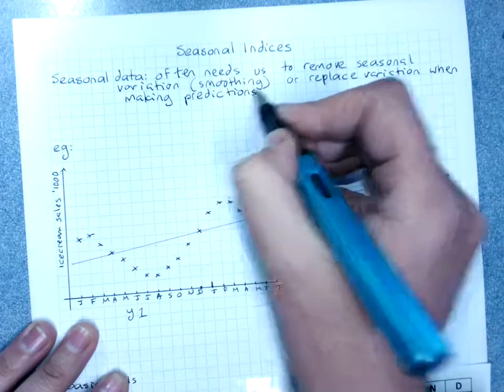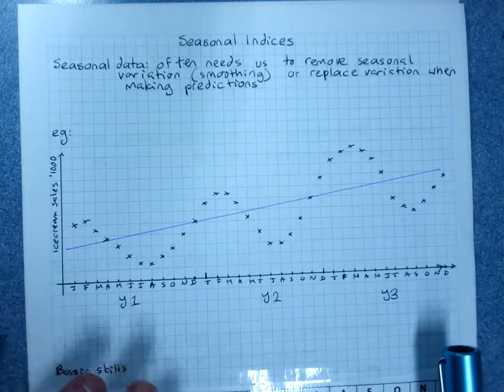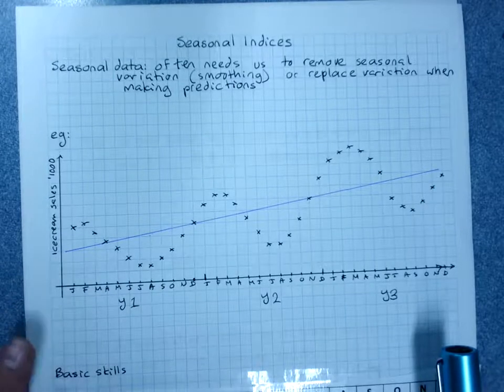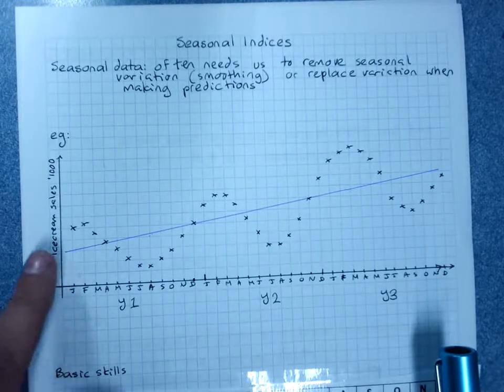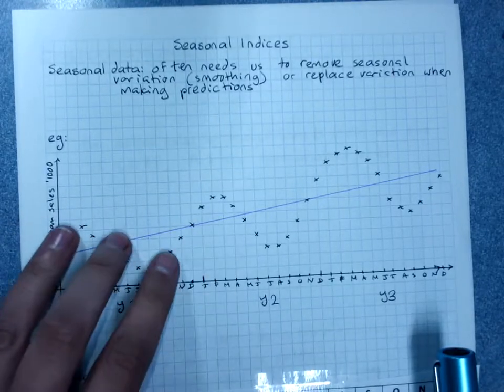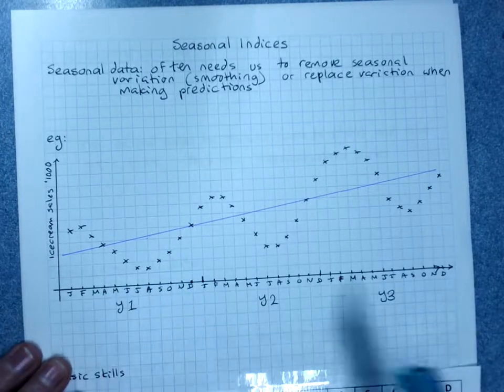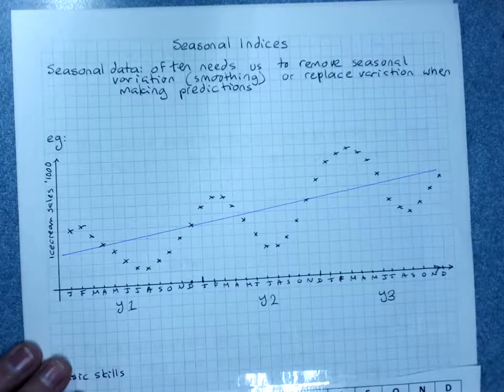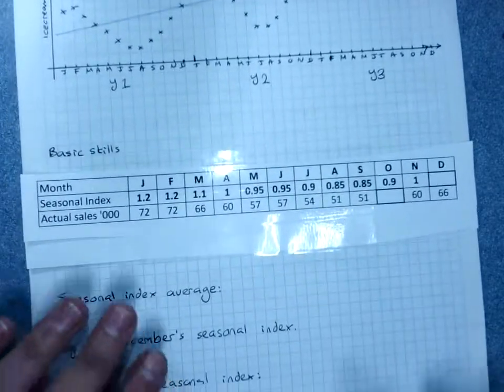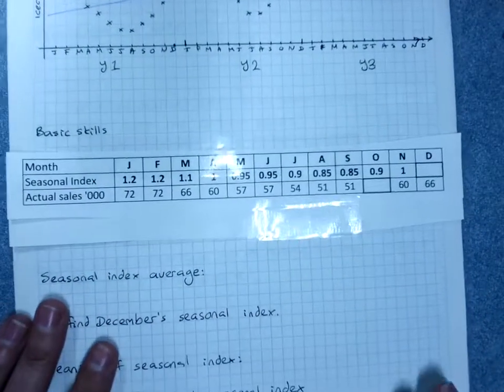Seasonal indices let us do that. This lesson we will just check: can we understand the concept of a seasonal index? Can we use a seasonal index to de-seasonalize data - that is, get rid of all this seasonal variation and get it more like what it would be without this variation? And can we use a seasonal index to re-seasonalize data? So we're just looking at the basic skills. We'll learn the whole smoothing thing next lesson.